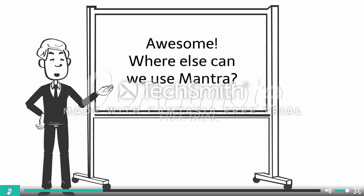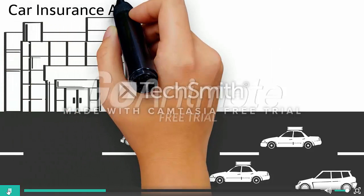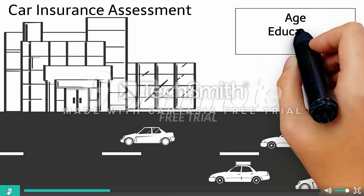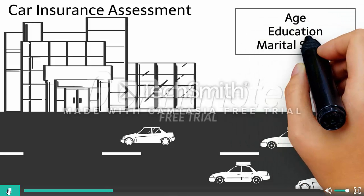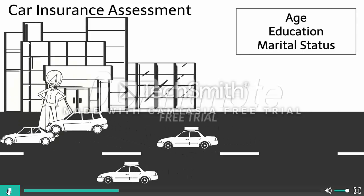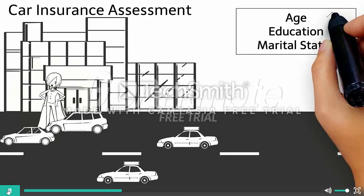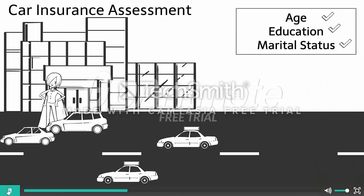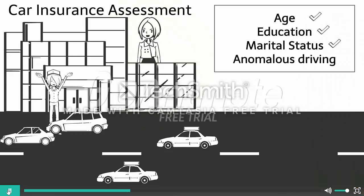Where else can we use MANTRA? Car insurance assessment traditionally considers parameters like age, education, and marital status. I am a rash driver, but I graduated from an Ivy League College, I am married and have two kids. I am empowered with MANTRA and I have found out about your anomalous driving from your past driving records.